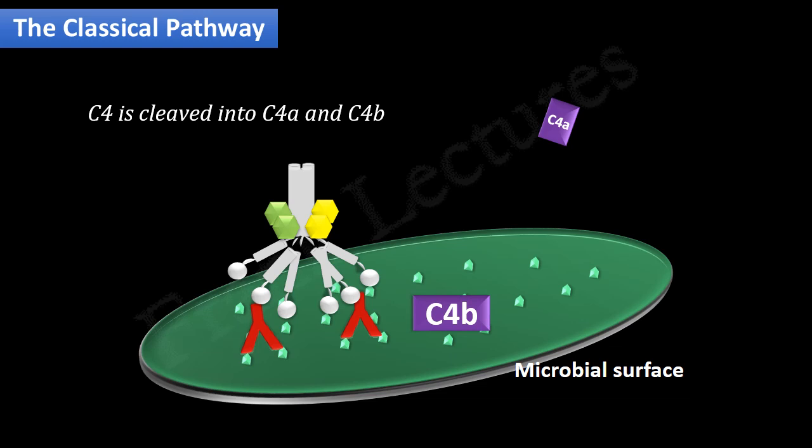This is followed by cleavage of C2 into C2A, which is the larger fragment, and C2B. C2A binds to C4B, and C2B is released. The resulting C4B2A complex is known as C3 convertase.